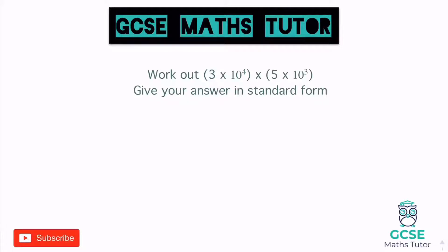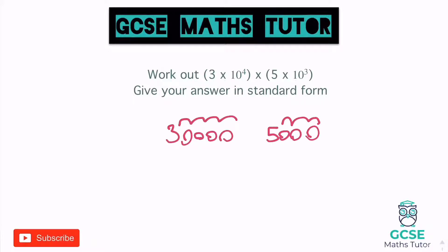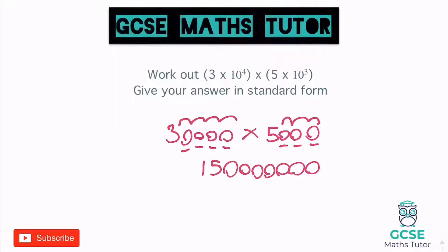This number 3 times 10 to the 4 would be 3 with 4 zeros. 5 times 10 to the 3 would be 5 with 3 zeros. We'd have to multiply these together. 3 times 5 gives us 15, and then we'd add on all the zeros — that's 7 zeros total. We could convert it back into standard form by placing the decimal: 1.5 times 10 to the 8.